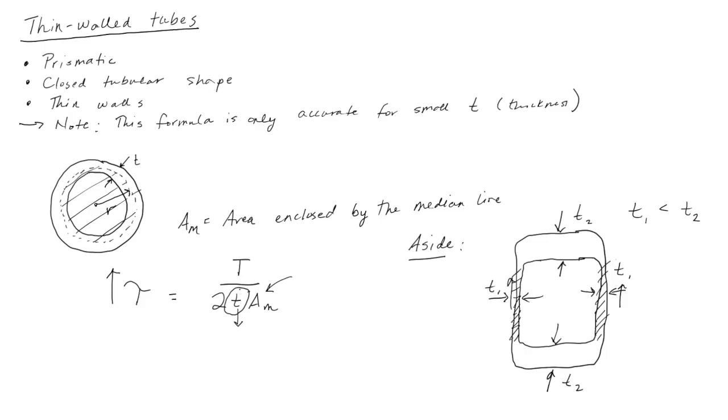Now let's quickly change gears and talk about strain energy for thin-walled tubes. We can write down the formula for thin-walled tubes to be T squared L over 2GJ, where J is what's called a torsion constant.